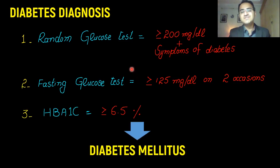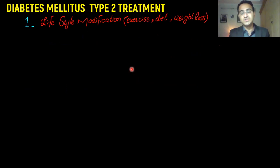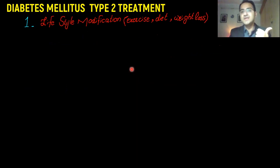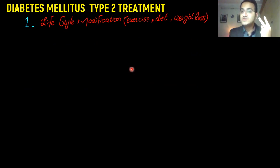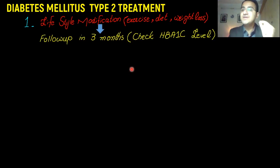When you have diagnosed a patient with diabetes mellitus, you begin with the first-line therapy. The first-line therapy is lifestyle modification. In lifestyle modification, you ask the patient to do at least 30 minutes of exercise every day, change their diet to lower sugar intake, and to lose weight — because obesity is related with insulin resistance. You ask the patient to come back to your clinic in three months.